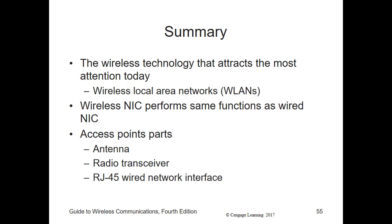However, collisions will still happen. One of the most common causes is called the hidden node problem — when two or more devices are able to communicate with the AP but are too far away or blocked by an obstacle and cannot hear each other. This is when RTS-CTS solves the problem. When the AP sends out a CTS frame, all devices are able to receive it. The CTS frame includes the amount of time required for a particular device to transmit its frame, so all other devices will refrain from transmitting during that time until they hear an acknowledgement frame from that hidden node.